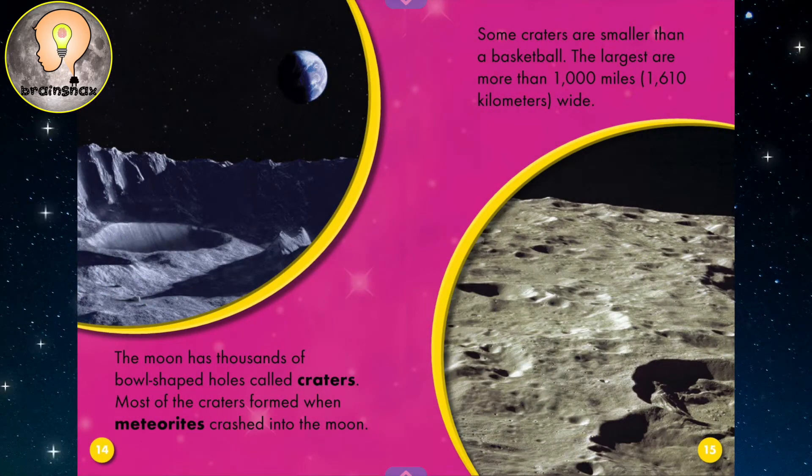The moon has thousands of bowl-shaped holes called craters. Most of the craters formed when meteorites crashed into the moon. So craters are holes on the moon, and they are made from meteorites, which are rocks flying in space that have gone and hit the moon.